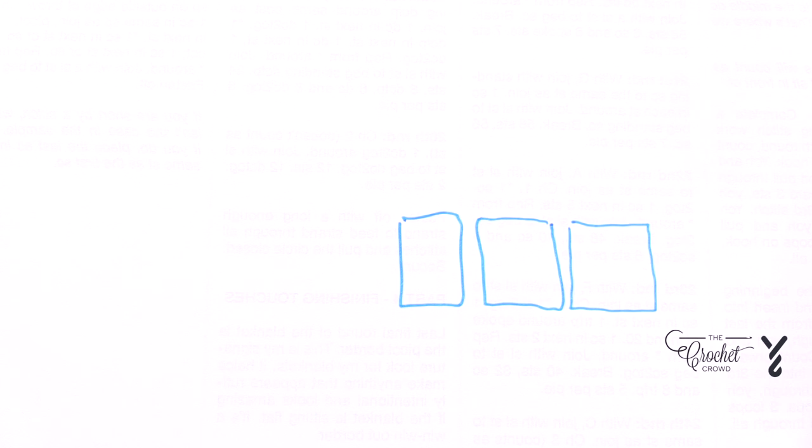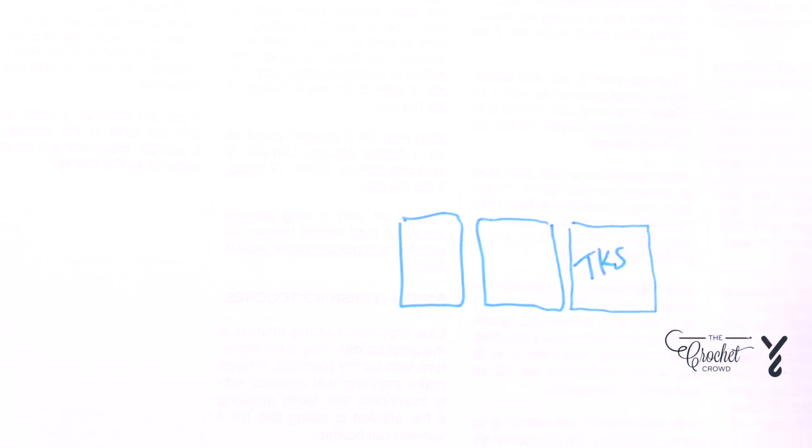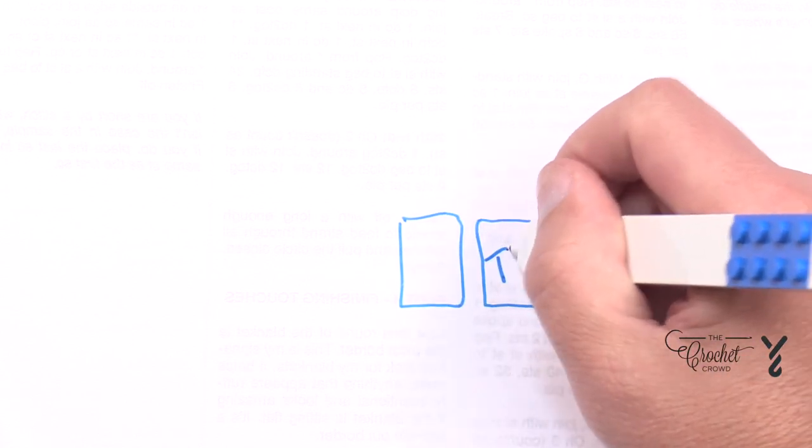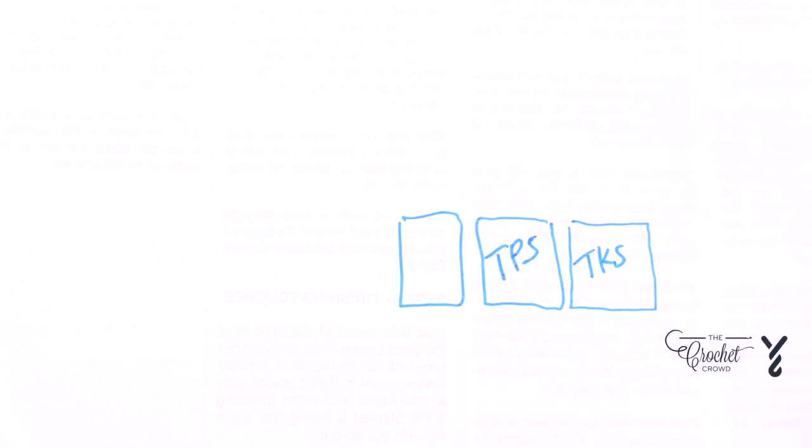So with these particular boxes you have to have the balance. The first time that we go after this we are going to go at it from a Tunisian knit stitch, so let's put TKS. Those are going to be worth a certain amount of stitches which we'll talk about. The next one box will be Tunisian purl stitch. Do you get it?